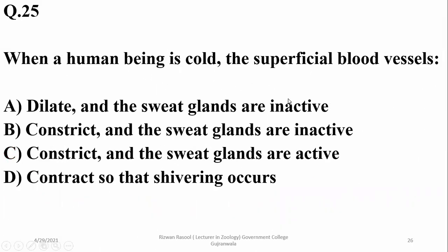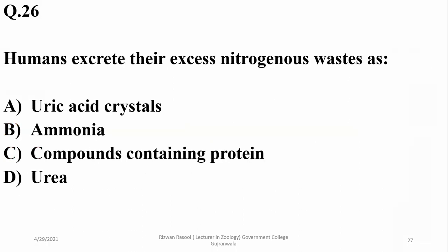When human beings are cold, the superficial blood vessels constrict and the sweat glands are inactive to reduce heat exchange — so alpha and beta apply. Humans excrete their excess nitrogenous waste mainly as urea, but other nitrogenous wastes are also present in urine.